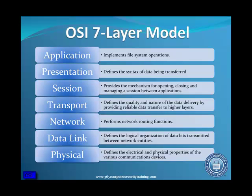exits the system and is sent to the other system where control is passed from bottom to top, completing the communication cycle. An overview of each of the seven layers is shown on the slide, with the physical layer being the first or lowest level.